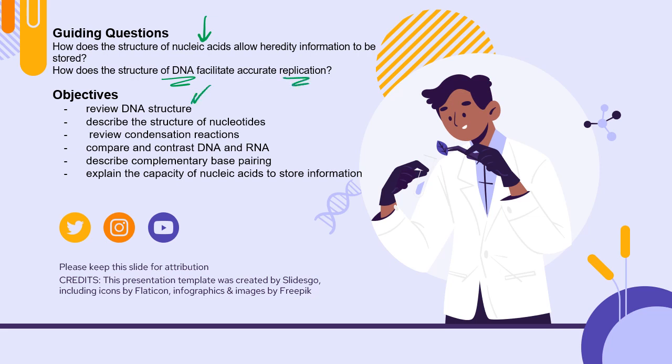We reviewed DNA structure, talked about different pieces of nucleotides—phosphate groups, pentose sugars, nitrogenous bases. We looked at how condensation reactions put nucleotides together to make polymers of DNA and RNA, which have similarities and differences. We talked about complementary base pairing—adenine and thymine pair, cytosine and guanine pair—and how much information we can hold in DNA and RNA to pass on genetic information. Good work today.